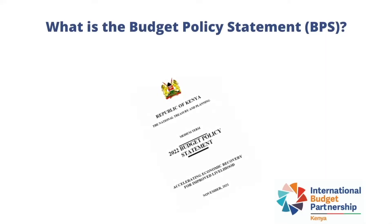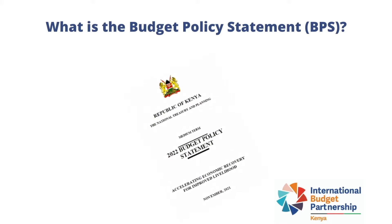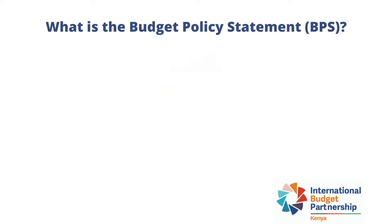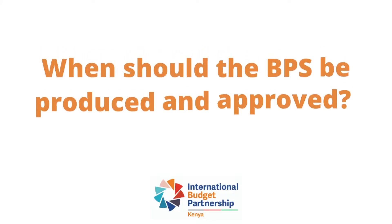The Budget Policy Statement is arguably the most important budget document in the annual budget cycle, and it is produced by the national government. However, at the county level, the equivalent document to the BPS is a County Fiscal Strategy Paper.